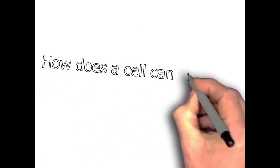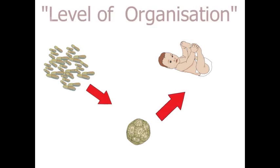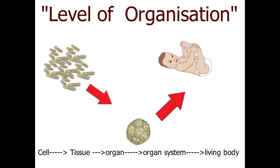So how does a cell create an entire living body? One cell divides into a second, the second into a third, and so on — all cells keep dividing and create a group called a tissue. These tissues then divide further into groups and form organs, and many organs together form a living body. This entire process is called the level of organization: cell → tissue → organ → organ system → living body.